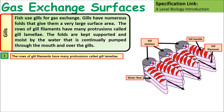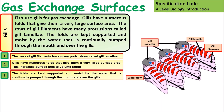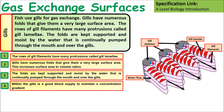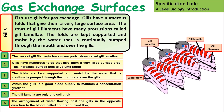Some key facts you need to know about gills: the rows of gill filaments are covered in gill lamellae. Gills have numerous folds to give them a large surface area. The folds are kept supported. Within the gills, there is a good blood supply to maintain a concentration gradient. The gill lamellae are only one cell thick, so there is a short diffusion distance. The arrangement of water flowing past the gills is in the opposite direction to the blood, and this is called countercurrent flow.